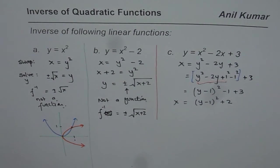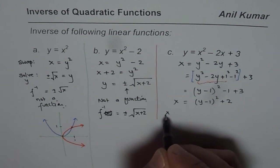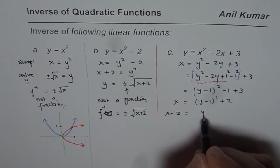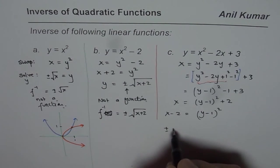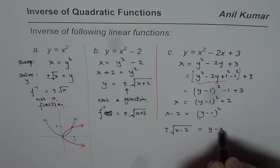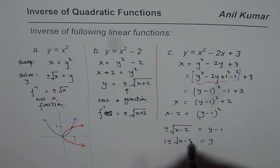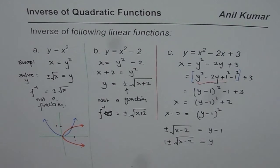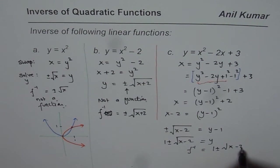Now we can solve for y. Subtract 2 from both sides to get x minus 2 equals (y minus 1) squared. Taking the square root gives plus or minus square root of x minus 2 equals y minus 1, so y equals 1 plus or minus square root of x minus 2. In function notation, f-inverse equals 1 plus or minus square root of x minus 2.